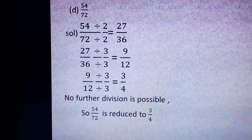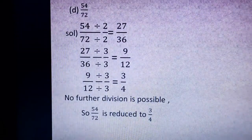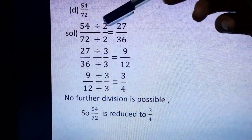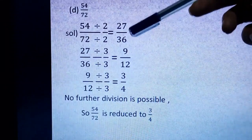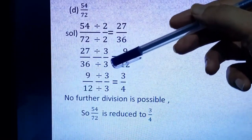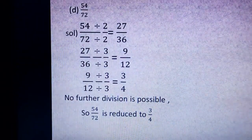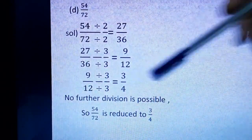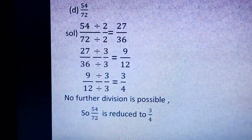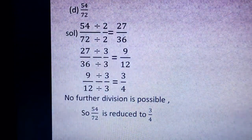Part D: 54 upon 72. We have to reduce it to the lowest form. 54 and 72 are both even, so divisible by 2 — dividing gives 27 upon 36. Then 27 and 36 are divisible by 3 — dividing gives 9 upon 12. Then 9 upon 12 divided by 3 gives 3 upon 4. No further division is possible, so 54 upon 72 is reduced to 3 upon 4.